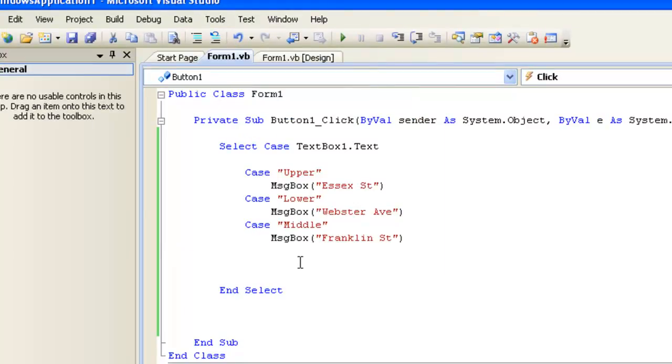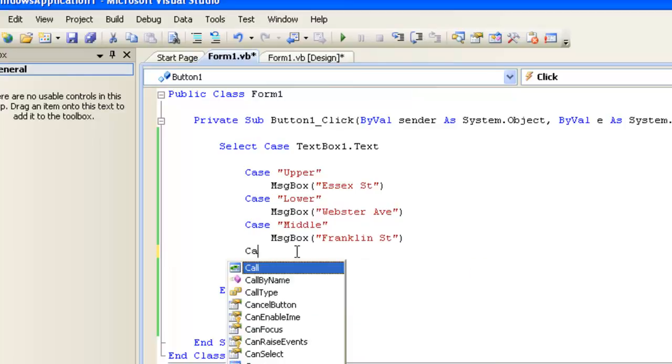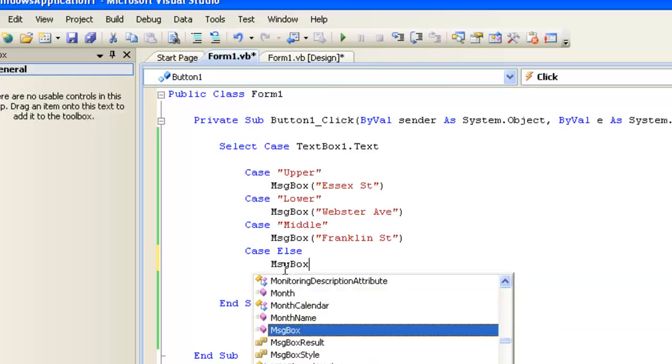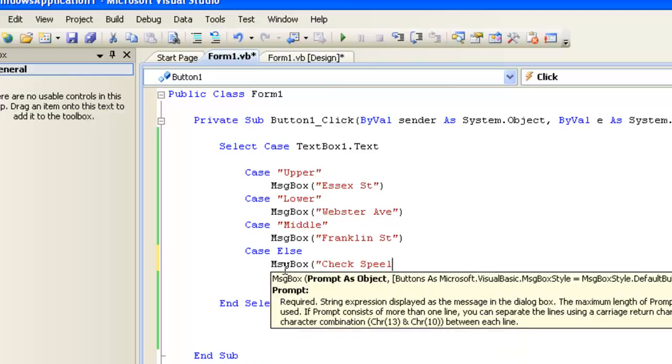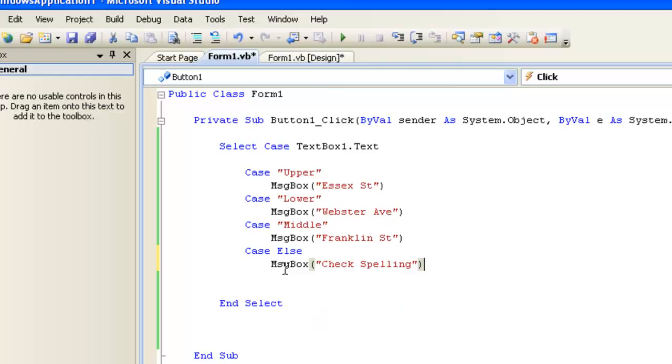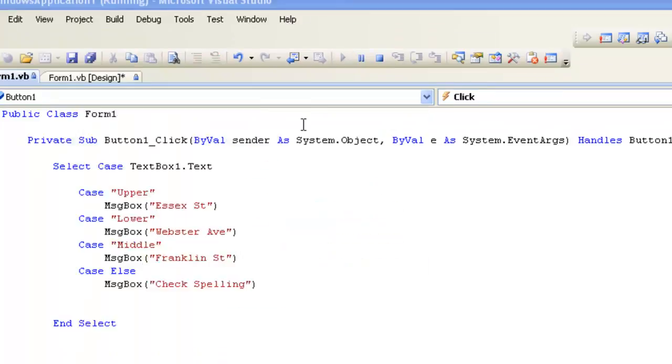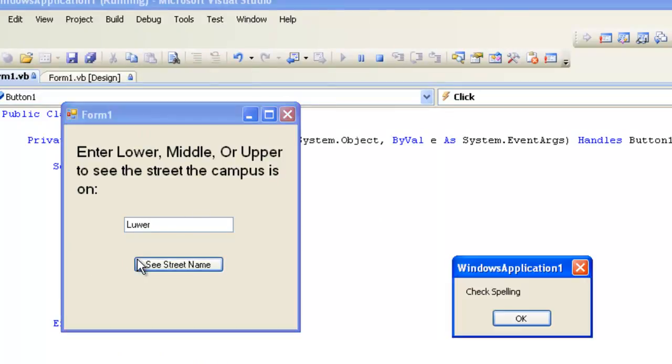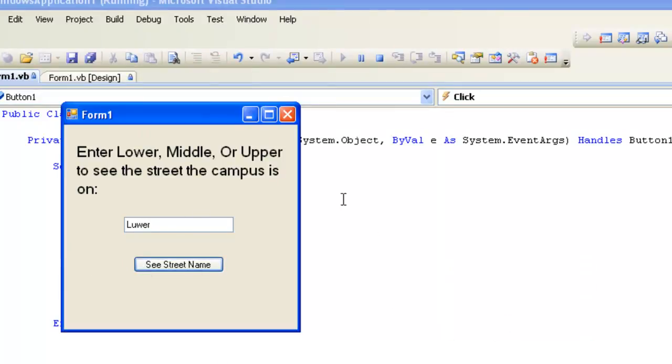So we could add another little piece, we could add a case else, which will be if the user puts in anything at all. And of course, we don't put this else in quotes, because that else is code to the computer. The user puts in anything else, we can tell them, check spelling, because they didn't spell it correctly. So now if the user puts in, let's say they misspell lower, they spell it like l u w e r. Well, it says they need to check their spelling.